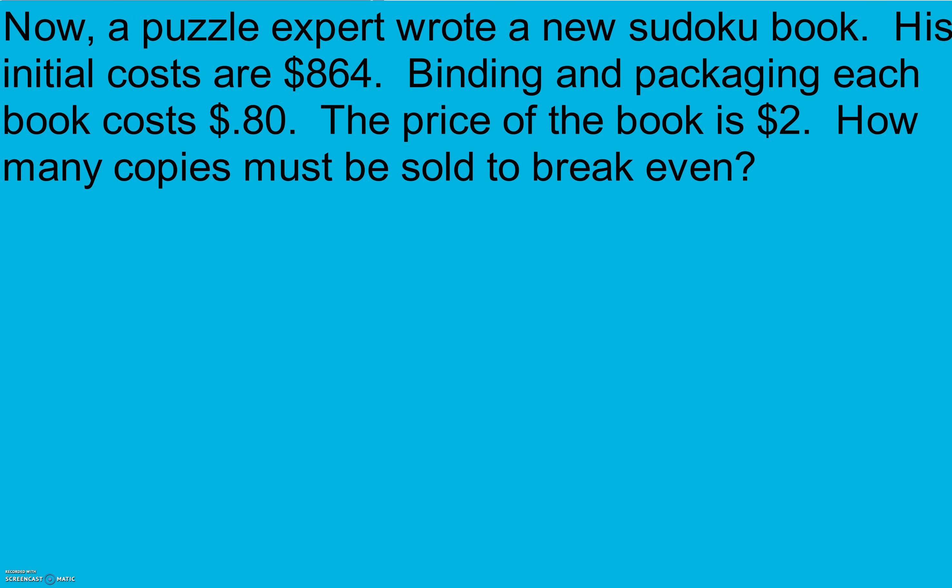Now, a puzzle expert wrote a new Sudoku book. His initial costs are $864. Binding and packaging each book costs 80 cents. The price of the book is $2. How many copies must be sold to break even? So again, we're talking about breaking even. So I need variables. First of all, I'm going to use X for the number of books. And I'm going to use Y again for my cost, so my money here, my amount of money for income and expenses or costs. Income is the amount of money we bring in. Expenses is the amount of money we spend.